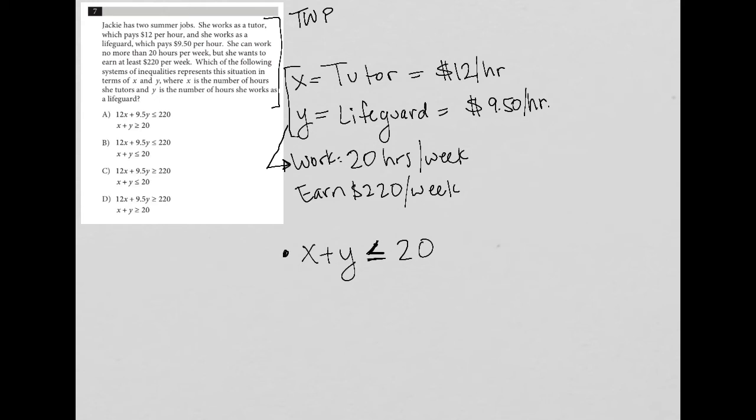Now, for earning $220 per week. Well, we know that she's making $12 from tutoring. So she's going to make 12 times X for every X hours of tutoring. And she's going to add to that salary $9.50 times however many hours of Y that she works for the week. And since it says earns at least, at least $220, that means she wants to make greater than or equal to $220.